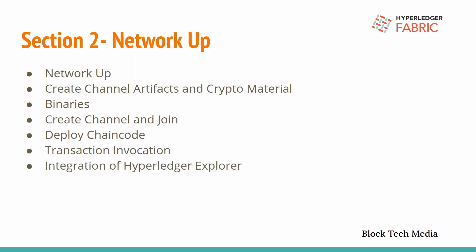Coming to the next section, that is the network up — we will get our network up and running. Later on we are going to create the channel artifacts, that is the genesis block and the channel transaction blocks. For bootstrapping our network, crypto materials are required. There are two ways to create crypto material: the first one is using the cryptogen tool, and the second one is using a certificate authority. For the time being we are going to create crypto material using the cryptogen tool, and later we will create videos on how to create certificates using certificate authority as well.